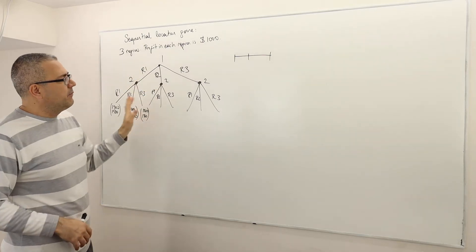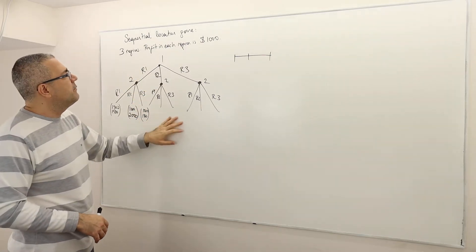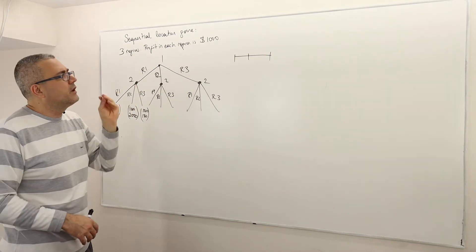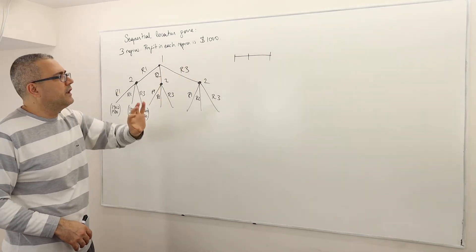So consider the sequential location game, but this time it's sequential. Firm one and firm two, or two entrepreneurs, do not choose the location simultaneously, but sequentially. For simplicity, I'm going to assume here that there are three regions, because otherwise the game tree is going to look very ugly with a lot of branches. And so there are three regions to select. And again, I'm not filling out the entire game tree, but let's suppose each region is going to bring the total profit of $1,000.